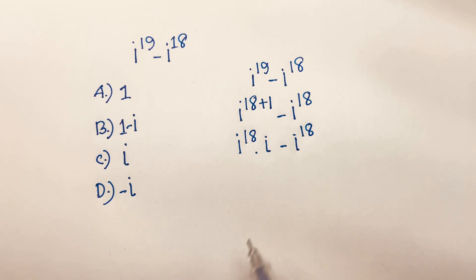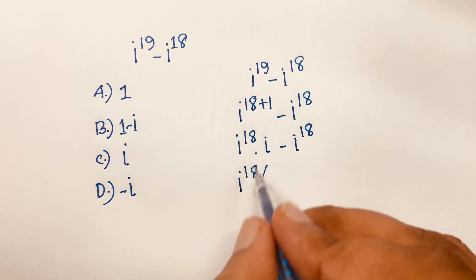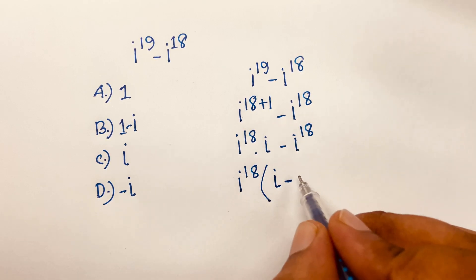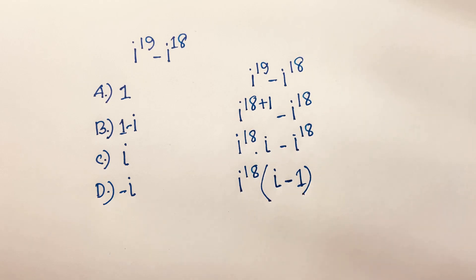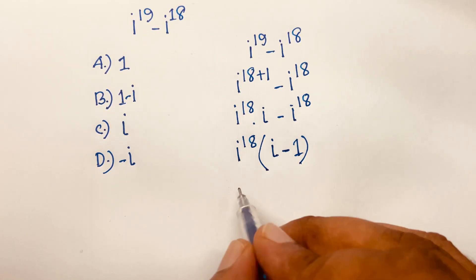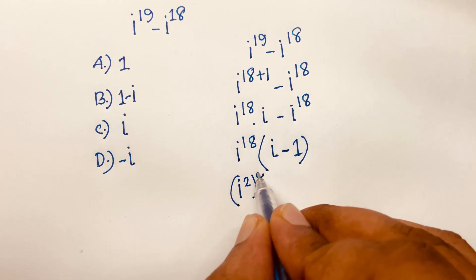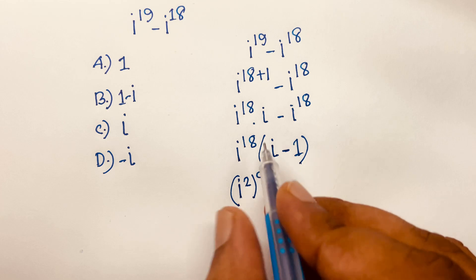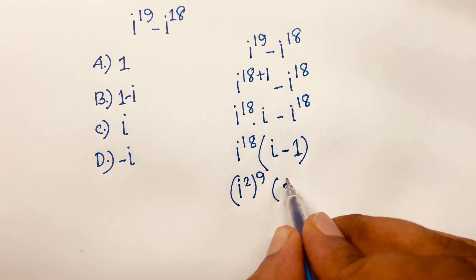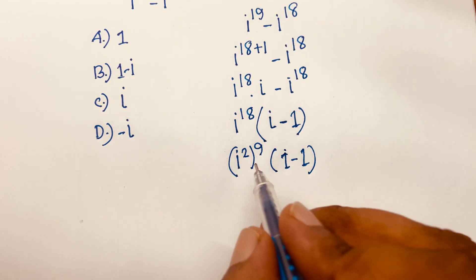I can say i to the power 18 is common. Factoring it out: i¹⁸ times (i minus 1). Now i to the power 18 can be written as (i²) to the power 9, since 2 times 9 equals 18. So we have (i²)⁹ times (i minus 1).